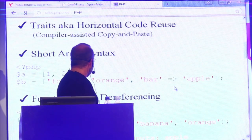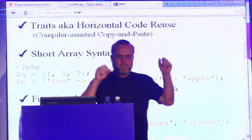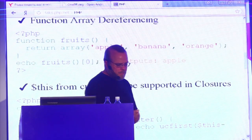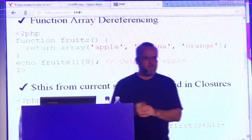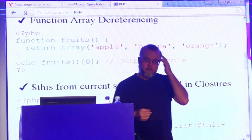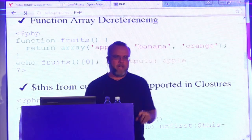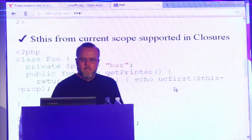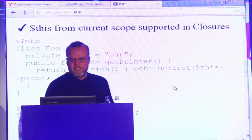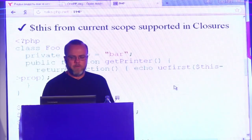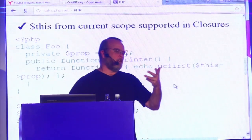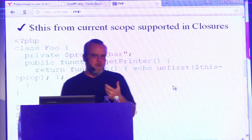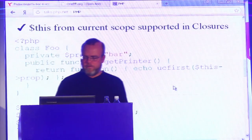We have a short array syntax, so you can use square brackets instead of the array keyword. You can do function array dereferencing — if you have a function like `fruits()` that returns an array, you can dereference it right on the function call: `fruits()[0]` will give you the first element, apple in that case. We slightly changed how we deal with `$this` from the current scope in closures. If you're defining a closure inside a class, `$this` is now available to that closure no matter where you call it from in your code.